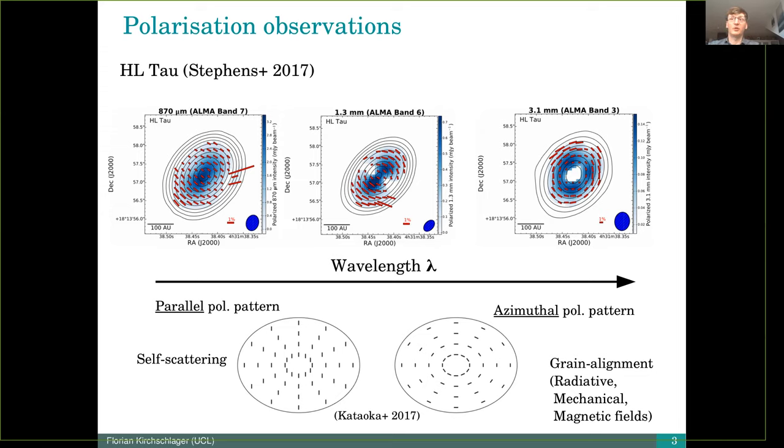For example, here HL Tau at 870 micrometer shows a radial alignment, while at 3 millimeter on the right, the alignment shows concentric circles. These structures are caused by different effects. The scattering on dust grains, the so-called self-scattering, produces the parallel alignment.